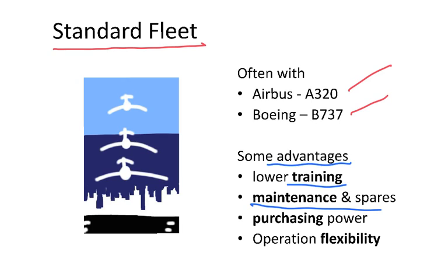Maintenance also plays a cost-saving role because you need fewer types of spare parts. There is also more purchasing power — when negotiating with the manufacturer to buy new aircraft, ordering a single aircraft type in larger volume means you can get greater discounts. And during operations, you have more flexibility: if one aircraft gets stuck at an airport, it can easily be replaced by another because it is exactly the same size.